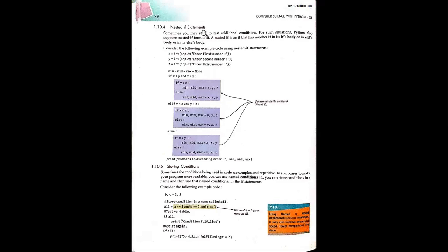Nested if statement: nested means something within. In a nested if, there are multiple conditions — if within if. You write an outer if, and inside its body there is another if. A nested if has an if inside another if body, or an if inside elif body, or an if inside else body. So within each and every block, there is one more if — that is known as a nested if.